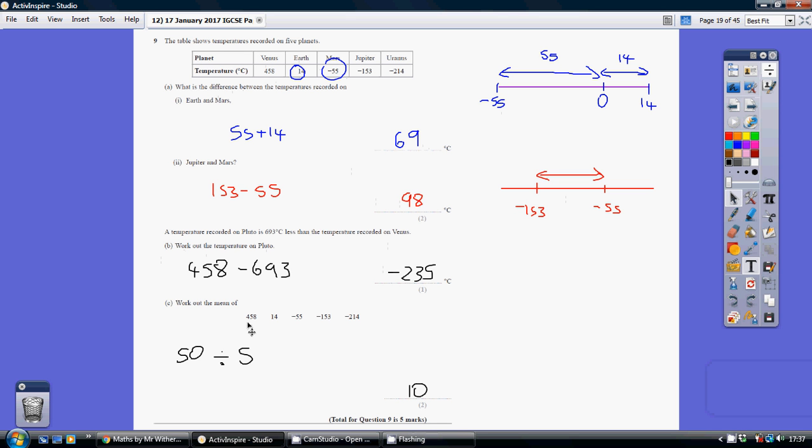Now part C, working out the mean. How do you work out the mean? You add up all the numbers, so pop that into your calculator, you get 50. Step 2, you divide that by the number of numbers. There are 1, 2, 3, 4, 5 numbers here. 50 divided by 5 is 10.